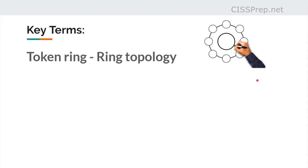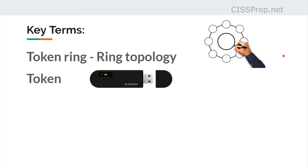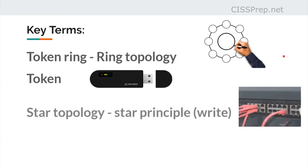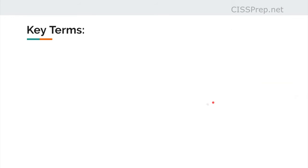Quickly, a bit on topologies. There's a token ring topology describing how networks are architecturally set up, and then there's also something called a ring appearing in domain five, which is actually an authentication device — make sure you understand the difference. The star topology is what most networks use, with all devices connected into one router or switch. There's also the star principle, covered in domain three, which is basically the right principle related to access control models.